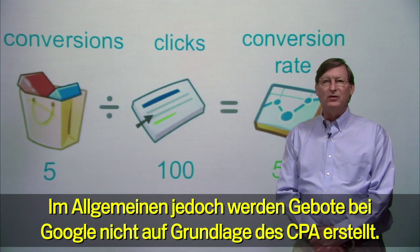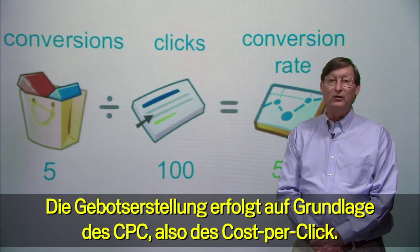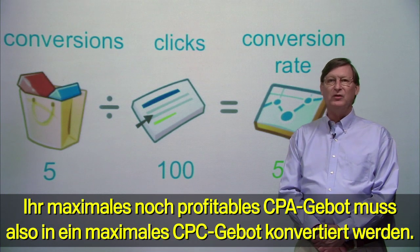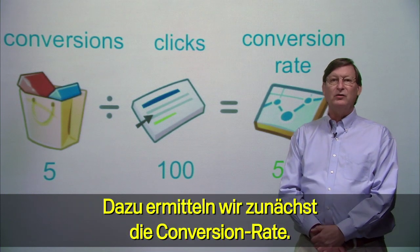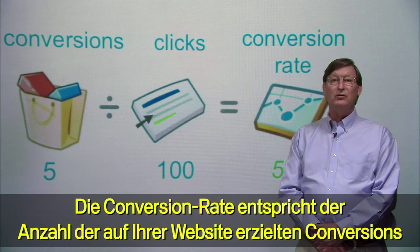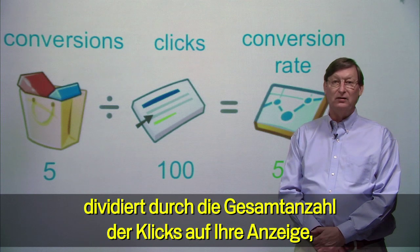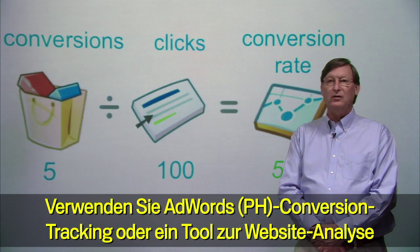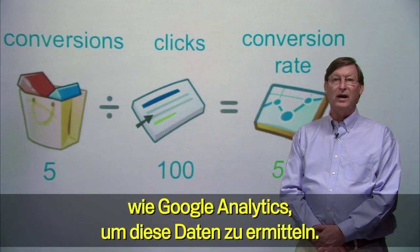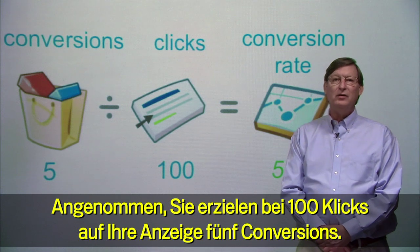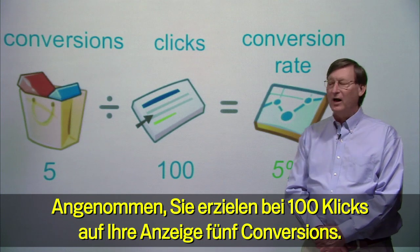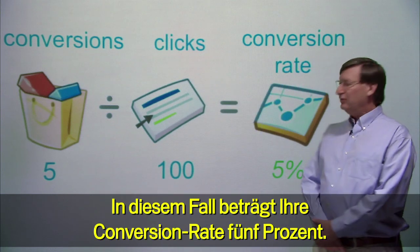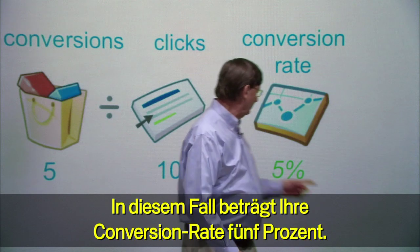In general, however, you don't bid by CPA on Google. You bid by CPC, or cost per click. So you need to convert your maximum profitable CPA into a maximum CPC bid. The first step is to determine your conversion rate. Your conversion rate is the number of conversions completed on your site divided by the total number of ad clicks to your site. You can use AdWords conversion tracking or a website analytics tool like Google Analytics to get this data. So let's say that for every 100 people that click on your ad, you get 5 conversions — in this case, your conversion rate would be 5%.